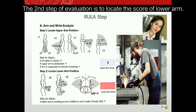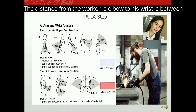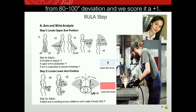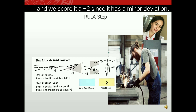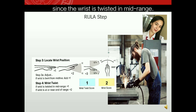Step two is to locate the score of the lower arm. The distance from the worker's elbow to his wrist is between 80 to 100 degrees deviation, so we score it a plus one. Step three is to locate the wrist position, scored a plus two since it has a minor deviation. Step four is wrist twist, scored a plus one since the wrist is twisted in mid-range.